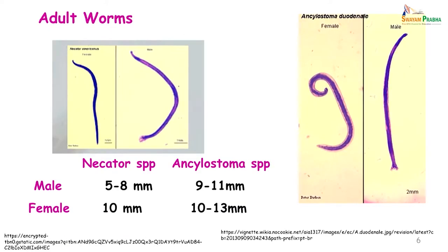Coming to the morphology of the adult worms, the adult worms of Necator species are tinier than Ankylostoma species, and as with all nematodes the males are smaller than the females. In Necator, the male is about 5 to 8 millimeters, whereas in Ankylostoma he is 9 to 11 millimeters. The female is more or less the same size in both worms. Ankylostoma duodenale female also shows a coil at one end — hence, hookworm.